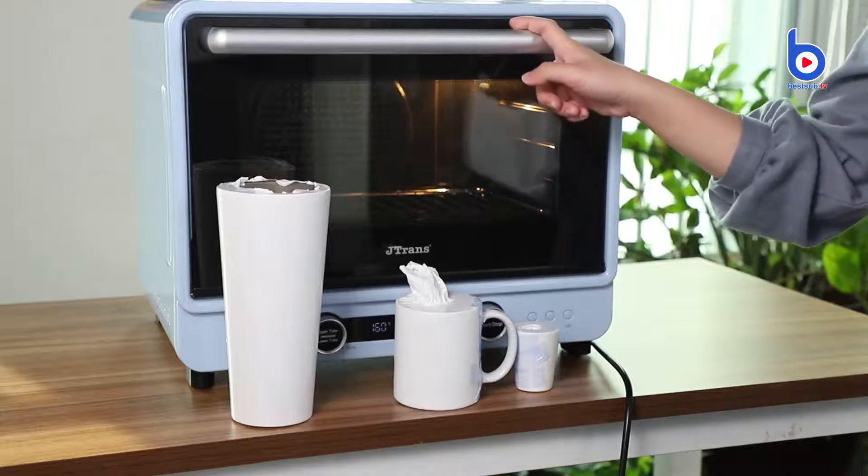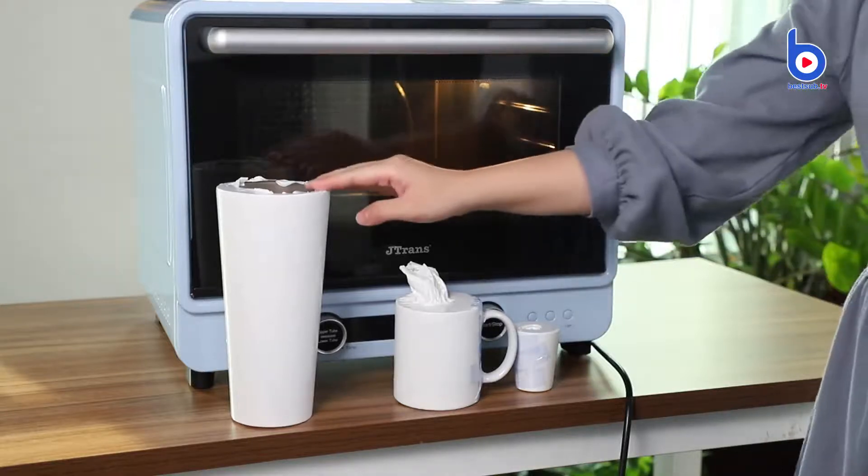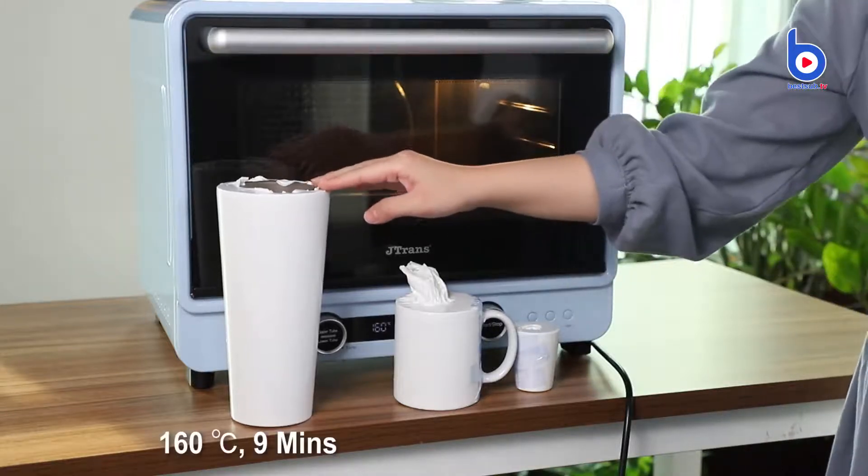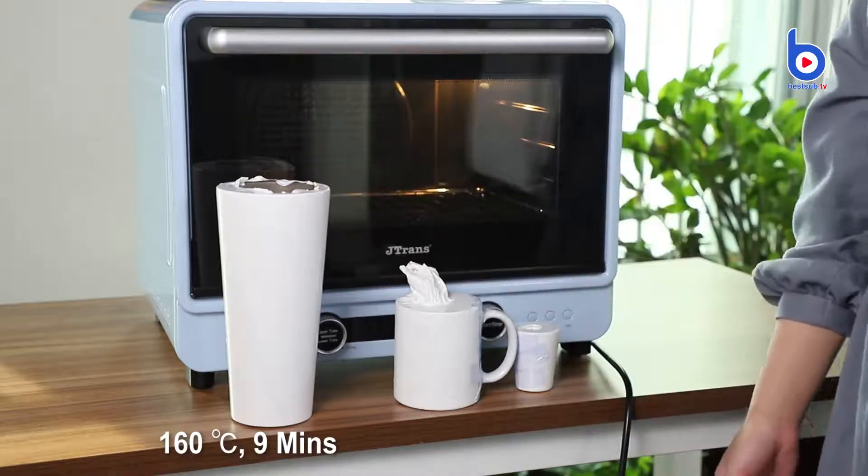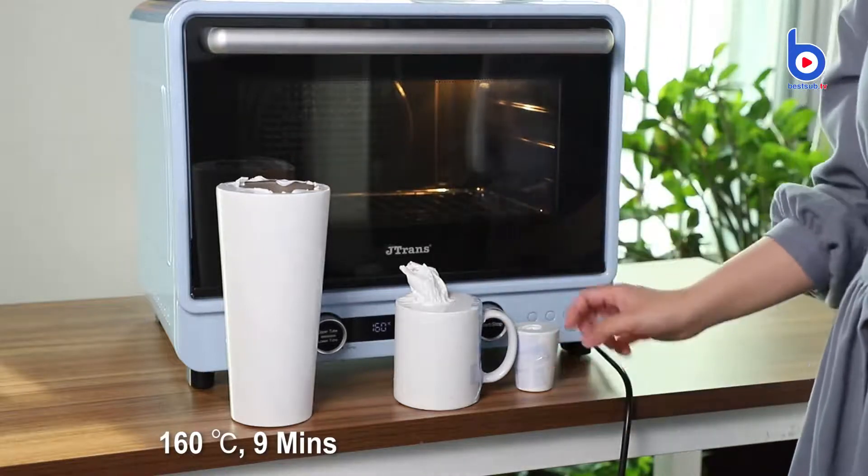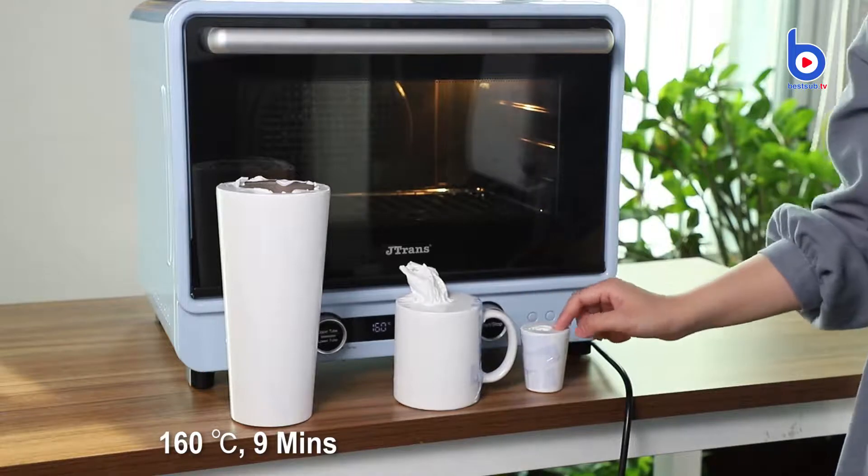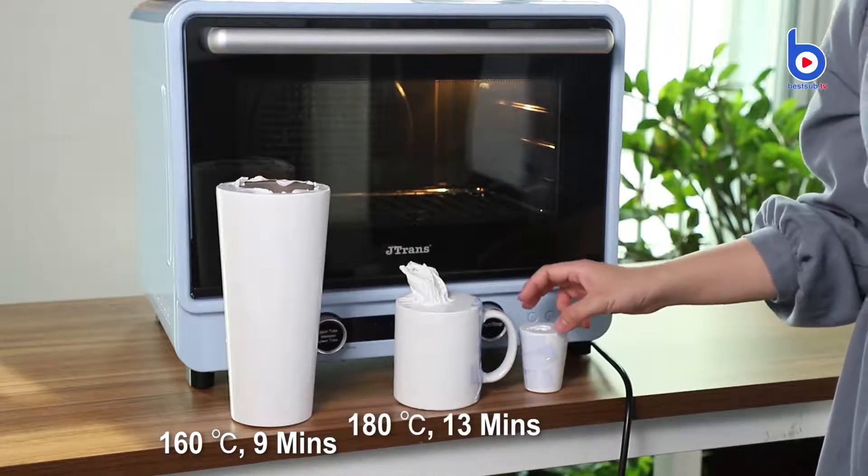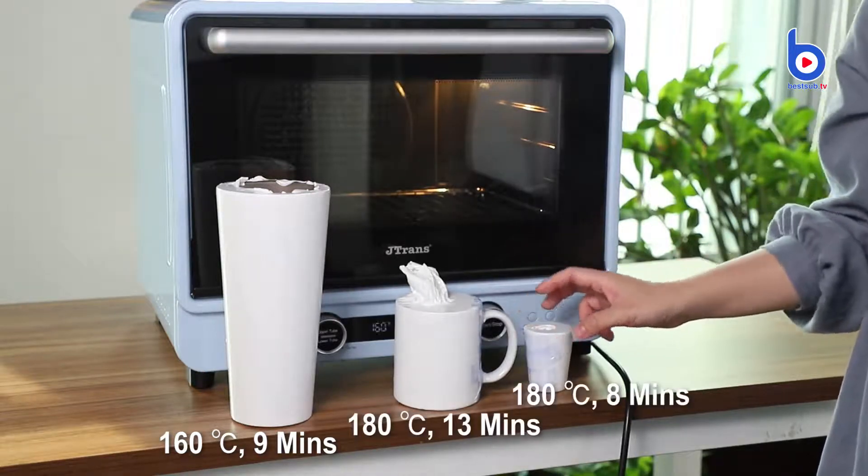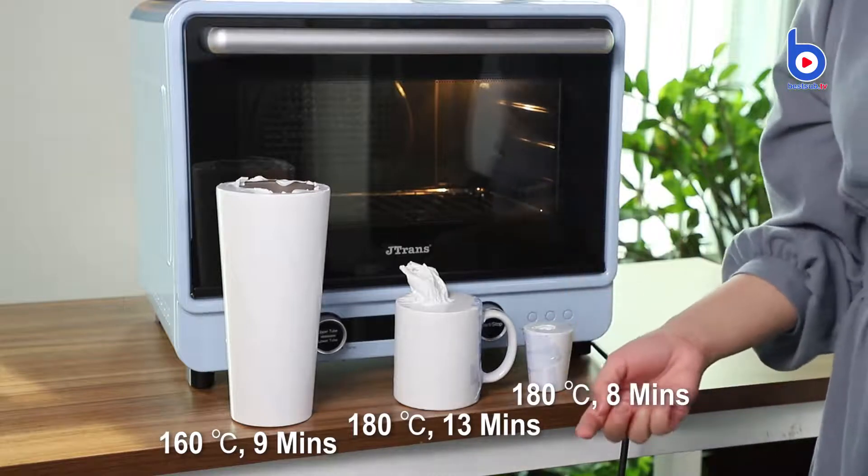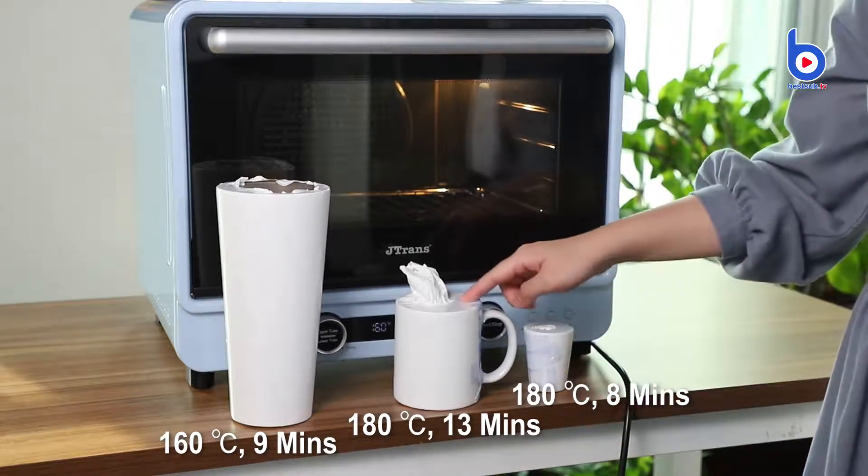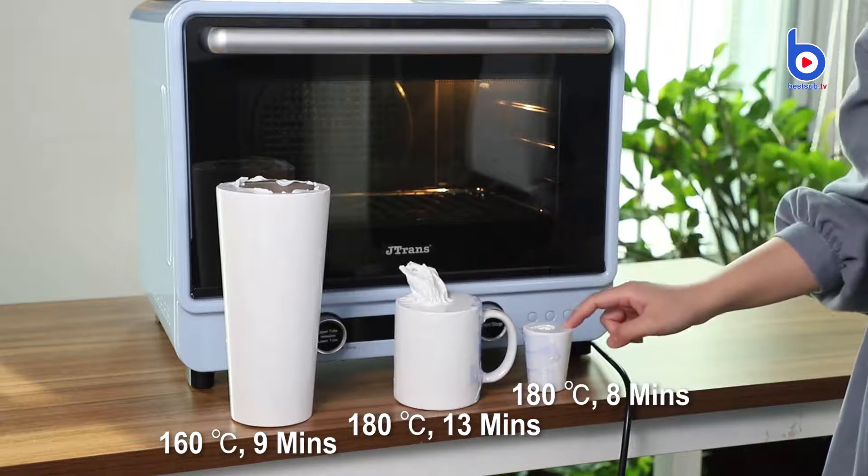The machine I use is our iSmart sublimation oven. For the large tumbler I will use 160 degrees Celsius and 9 minutes. For the mug and the short glass, because they are both made of ceramic, the temperature is the same: 180 degrees Celsius. But the mug needs 30 minutes and the short glass needs 8 minutes. So see you after sublimating.